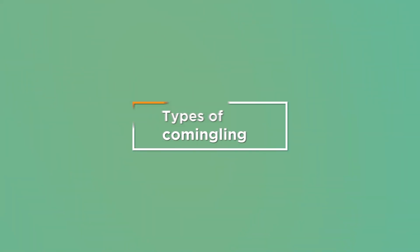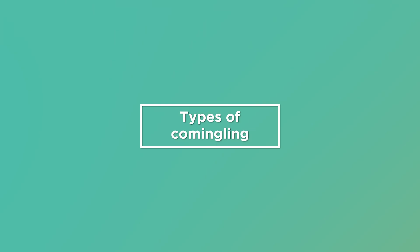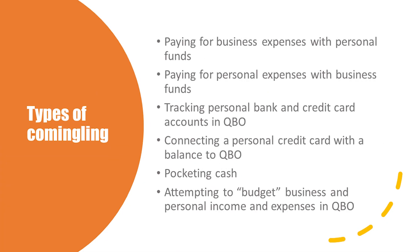Let's start with the different types of commingling. So what is commingling? It's paying for business expenses with personal funds, paying for personal expenses with business funds, tracking personal bank and credit card accounts in QuickBooks Online, connecting a personal credit card with a carry-forward balance to QuickBooks, pocketing cash, and attempting to budget business and personal income and expenses in QuickBooks.